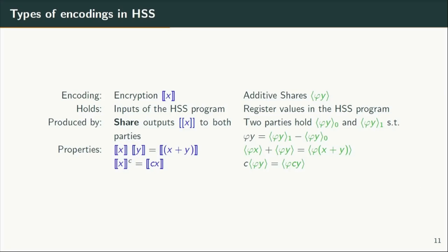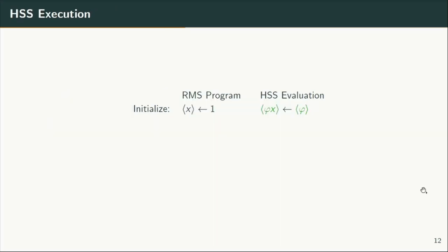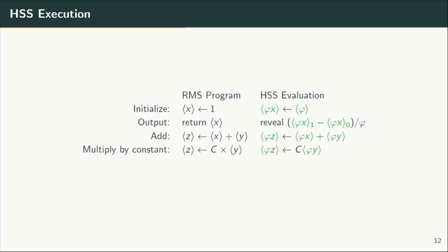The additive shares are used to represent the register or memory values of the RMS program. We say a value y is stored in the program if the parties have additive shares of phi times y, where phi is the private key of the encryption scheme. Similarly, given additive shares of phi times x and phi times y, we can get additive shares of phi times (x+y) and phi times c times y where c is a constant. There are of course multiple encodings of the same value, so equality here means they represent the same value. The key challenge that remains is how to perform a restricted multiplication, i.e., multiply an input x with a memory value y. The essential difference between different HSS protocols is in how they compute the RMS multiplication operation.